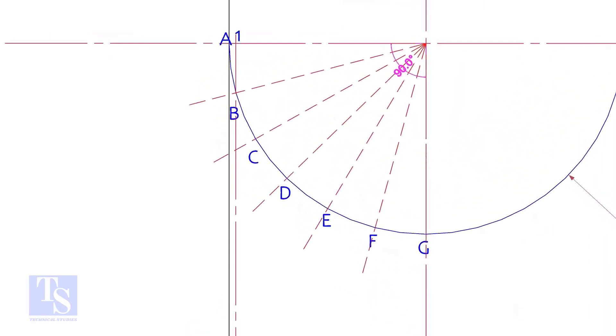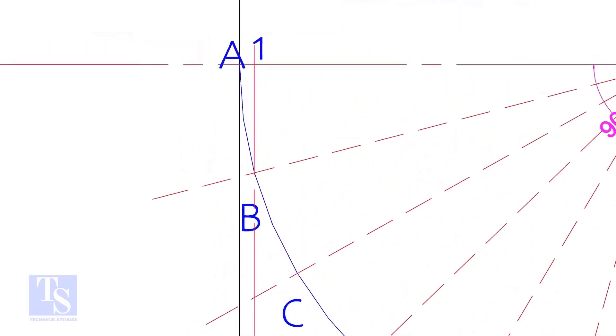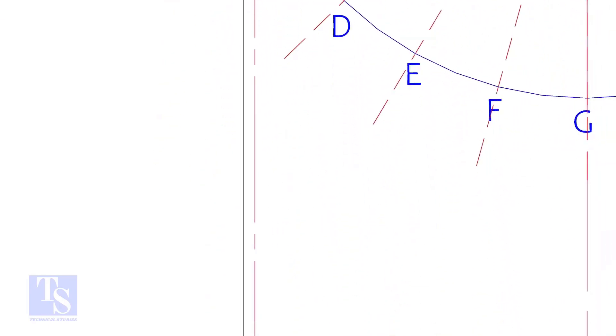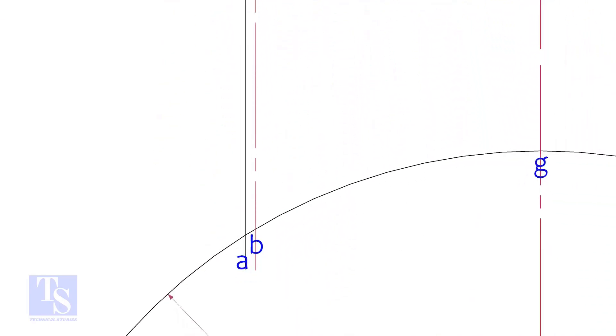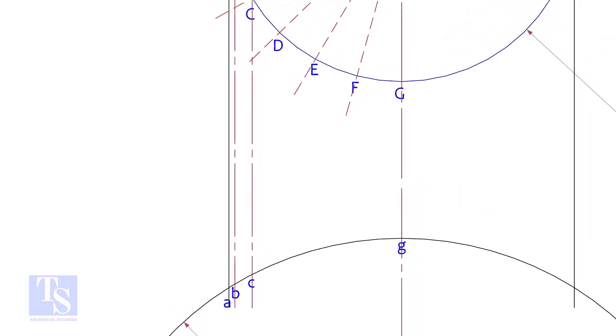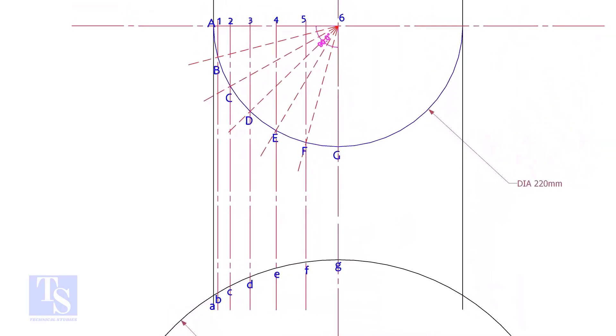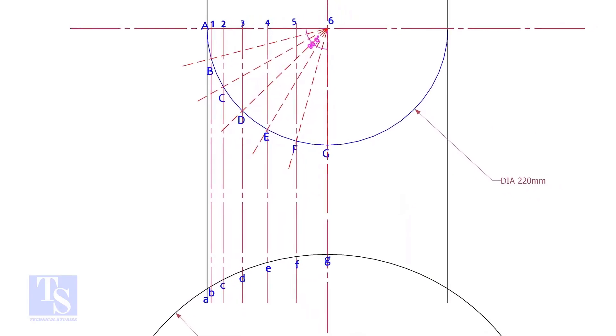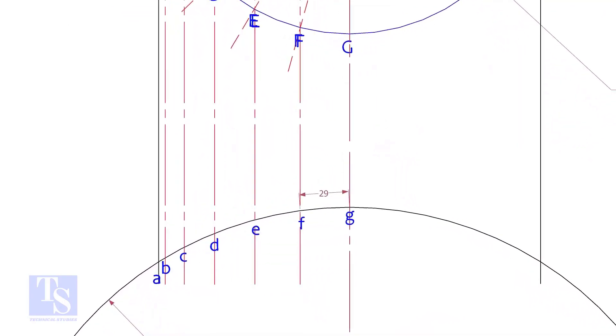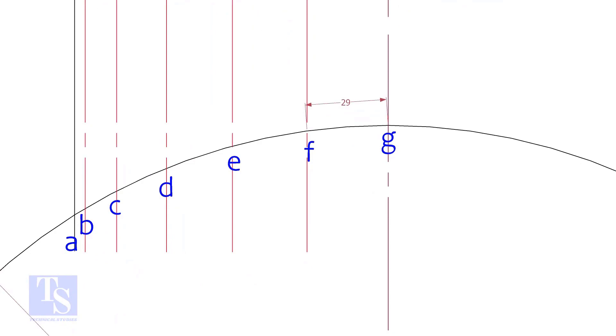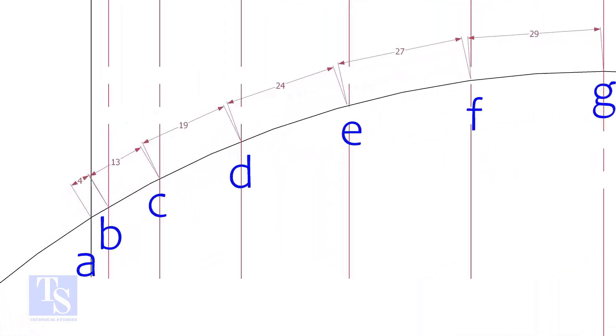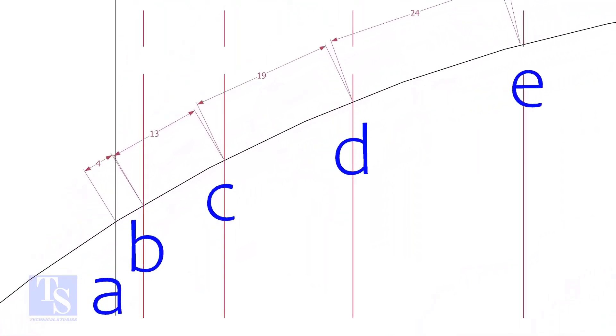Draw perpendicular lines BBCC etc. Measure and note down the arc length GF, FE etc. Don't measure the chord length. Hope you all know the difference between the arc length and the chord length.